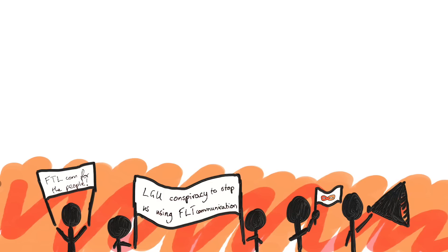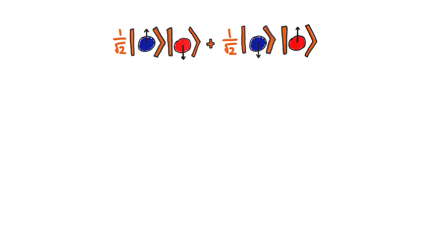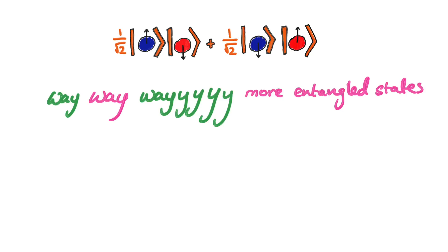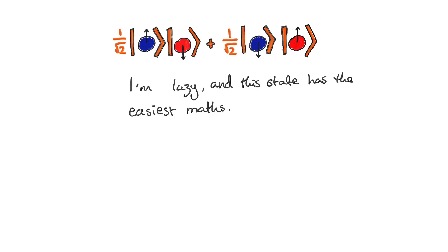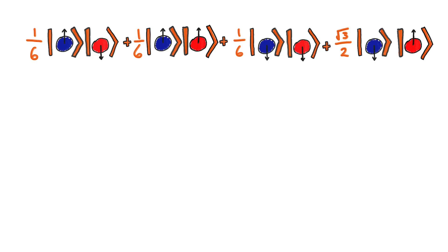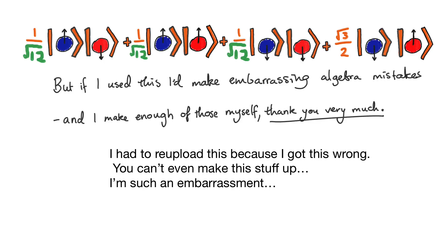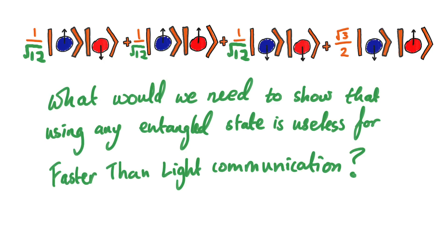Okay, but you might protest that I've only shown that this plan for faster than light communication is foiled for this particular entangled state. But what about the other ones? There are way way way more possible entangled states than just this. I always use this example because this state has the maximum possible entanglement, but in fact most two-particle states are entangled. For example, this state is entangled. So what would we need to do to show that any entangled state is useless for faster than light communication?